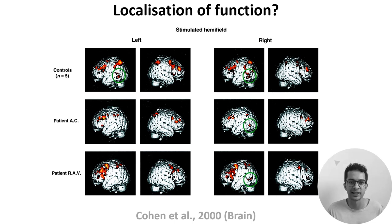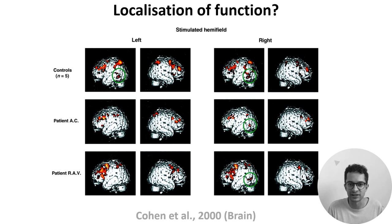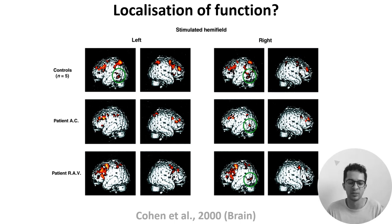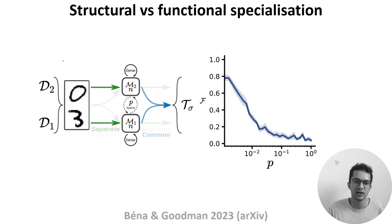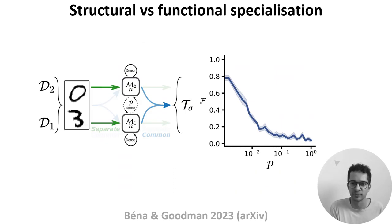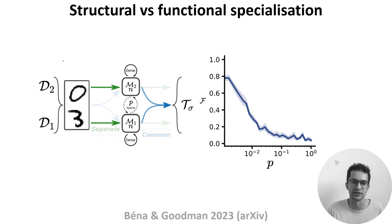Thirdly, if we look at brain structure, we see that connectivity tends to be sparse and modular, which would seem to imply that individual modules may perform specialized functions. But is that necessarily the case — will a network with a modular structure necessarily modularize function? To address that question, one paper uses a neat setup.